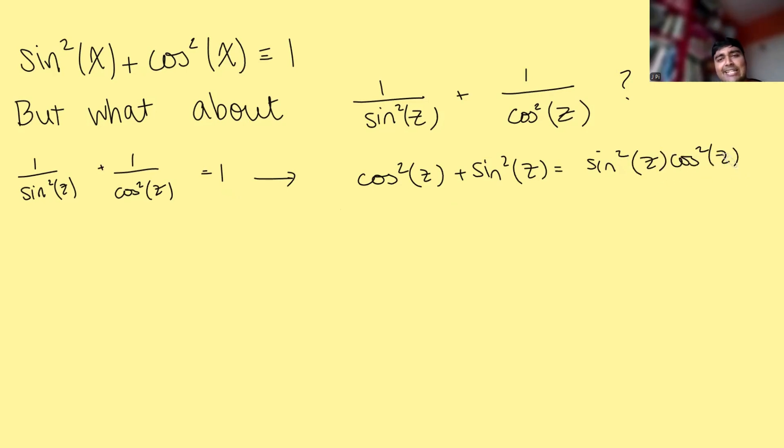This left-hand side here, we can just use the ordinary trig identity that we have up here. This thing here will just be 1. And in fact, what I'm going to do is multiply both sides by 4 here. So I'm actually going to make this 4 here. And then this is going to be 4 lots of sine squared z cos squared z.